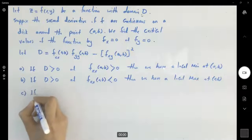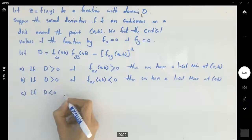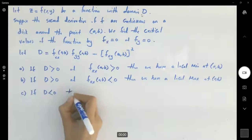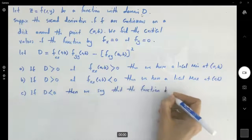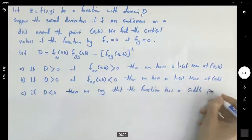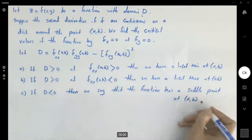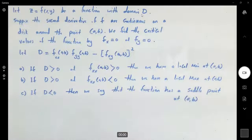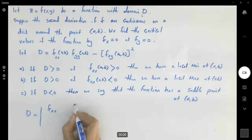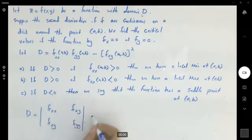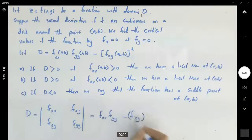The final case: if D is negative, then we have a saddle point at (a, b). If you are familiar with determinants, D — the Hessian — can be written as the determinant of the matrix with entries f_xx, f_xy, f_xy, and f_yy. To find the determinant, you multiply f_xx times f_yy minus f_xy squared.